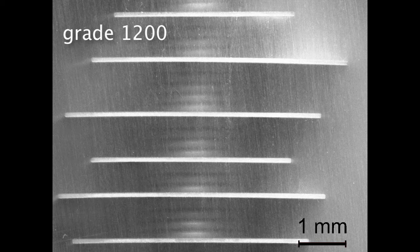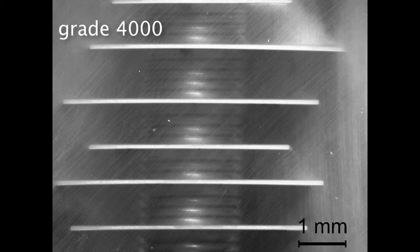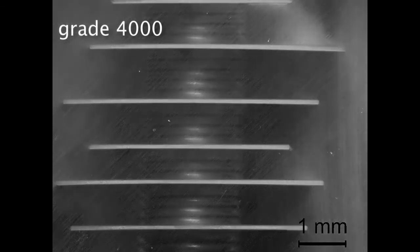If you look at the surface with your eyes, it will look rather dull. Here at grade 4000, the lines are barely visible. You can also see that they are diagonally aligned.